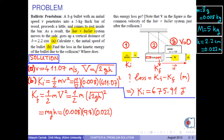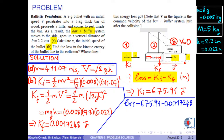Inserting the numerical values, the final kinetic energy of the bullet is computed. Using the formula for the loss in kinetic energy due to the collision and inserting the numerical values, we obtain approximately 675.908 joules, or in five significant digits, approximately 675.91 joules. As you can see, nearly all of the kinetic energy of the bullet is used up. All this energy went into breaking the wooden bar apart and overcoming the very large friction obstructing the bullet within the wooden bar.